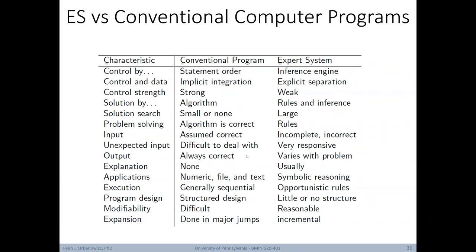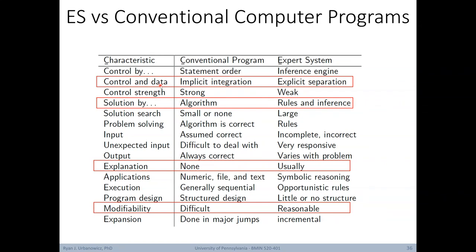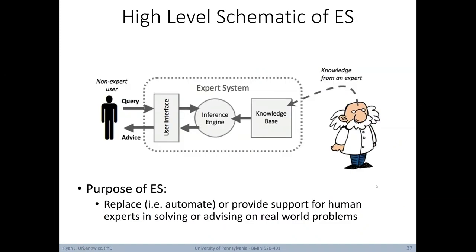Here's a table outlining major differences between expert systems and traditional computer programs. For control and data, conventional programming implicitly integrates the two, while expert systems explicitly separate them. In conventional programming, a solution is reached using an algorithm; in an expert system, it comes from inference on rules. Conventional programs usually don't have an explanation mechanism, but this is usually an important aspect of expert systems. Expert systems also offer a more reasonable path for modifiability compared to conventional programs.